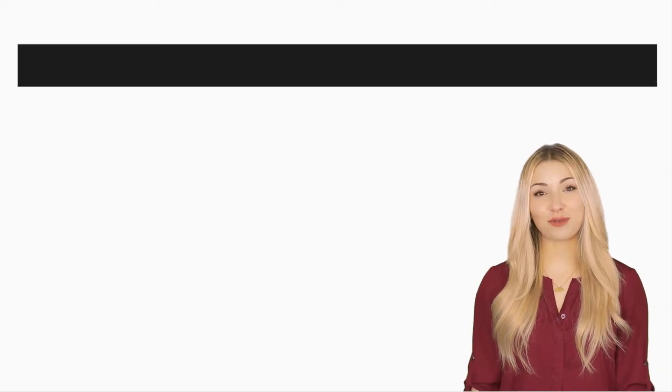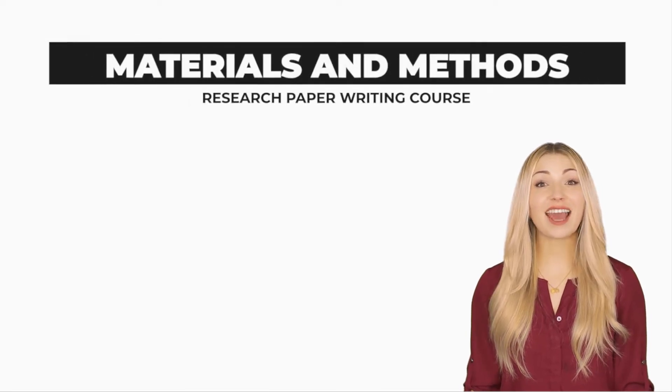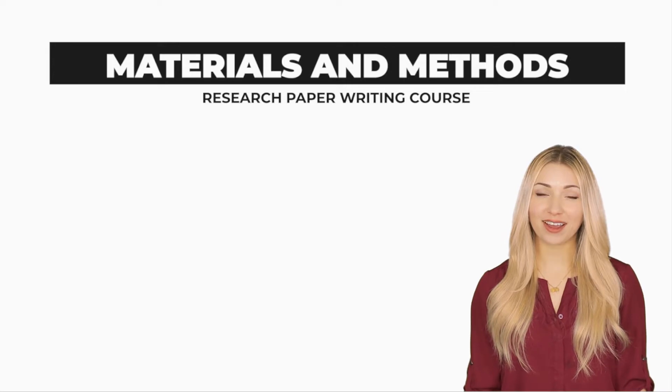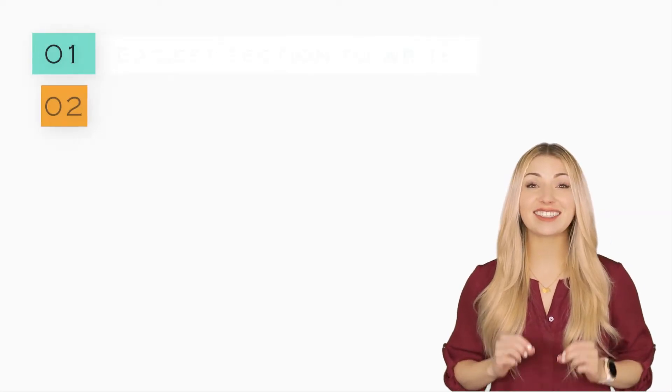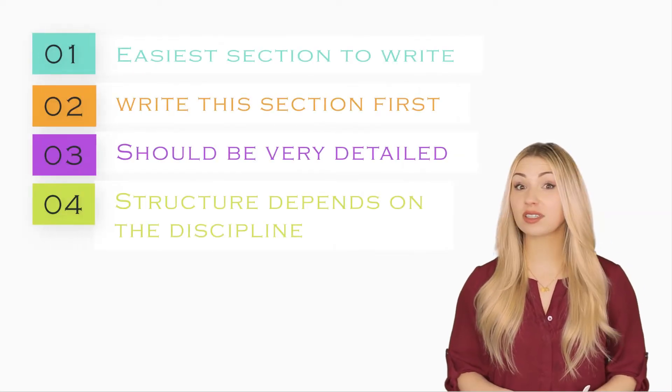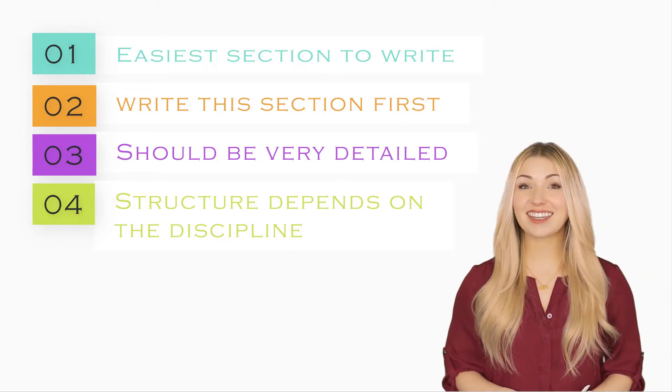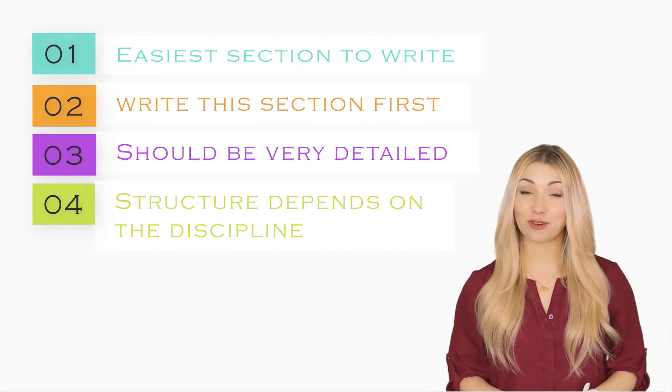Hi, this is Chelsea from RefnWrite. In this video, we will see how to write the Materials and Methods section of your research paper. This is generally the easiest section to write because you are simply reproducing what you did in your experiments. It doesn't require a lot of imagination from your part.